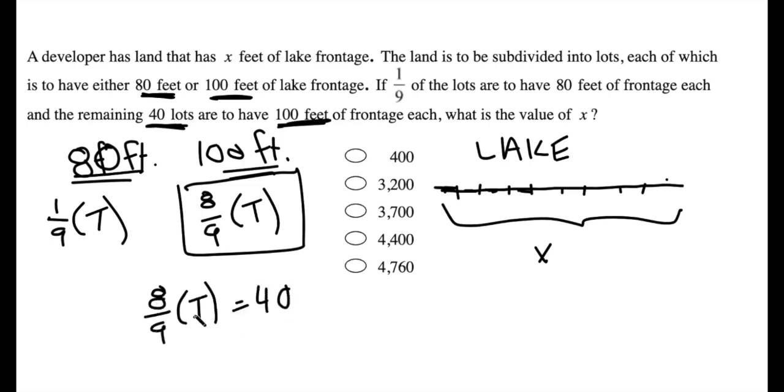And then I can solve for t, right? Multiply by nine, divide by eight, solve for t. And I find that t, the total number of lots, is 45.